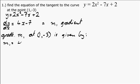The gradient of the tangent equals 4 times the value of x, which is 1, minus 7, which gives us minus 3.